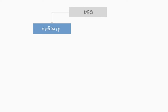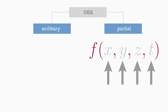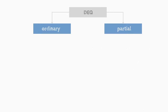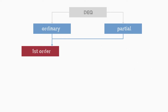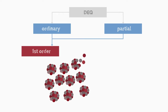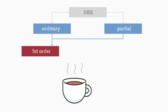Is the differential equation ordinary or partial? Partial differential equations describe multidimensional problems and are significantly more complex. Of which order is the differential equation? First order differential equations are usually easy to solve and describe, for example, exponential behavior such as radioactive decay or the cooling of a liquid.